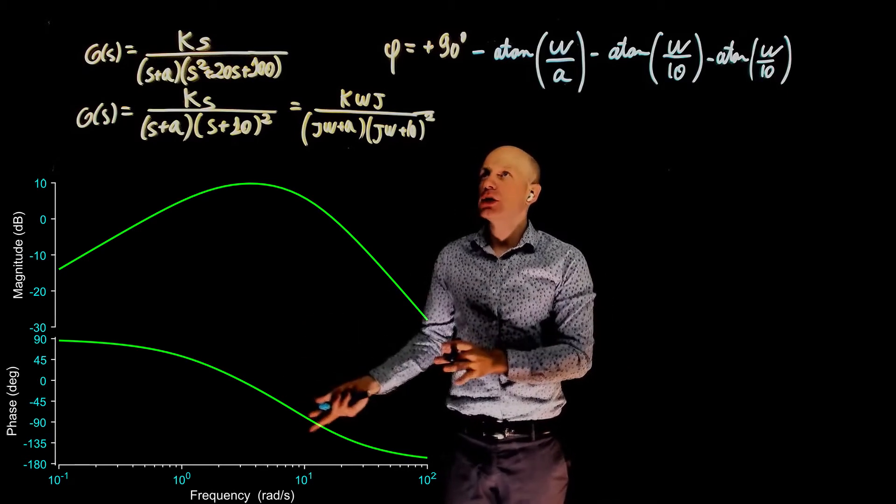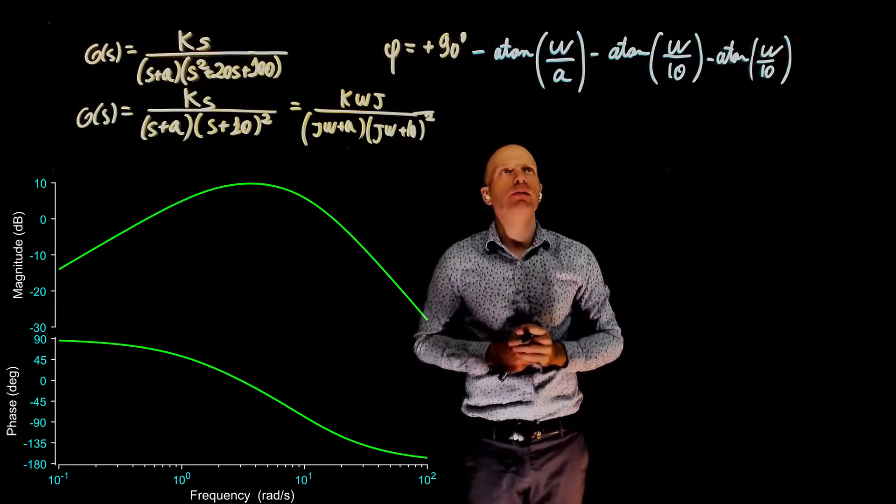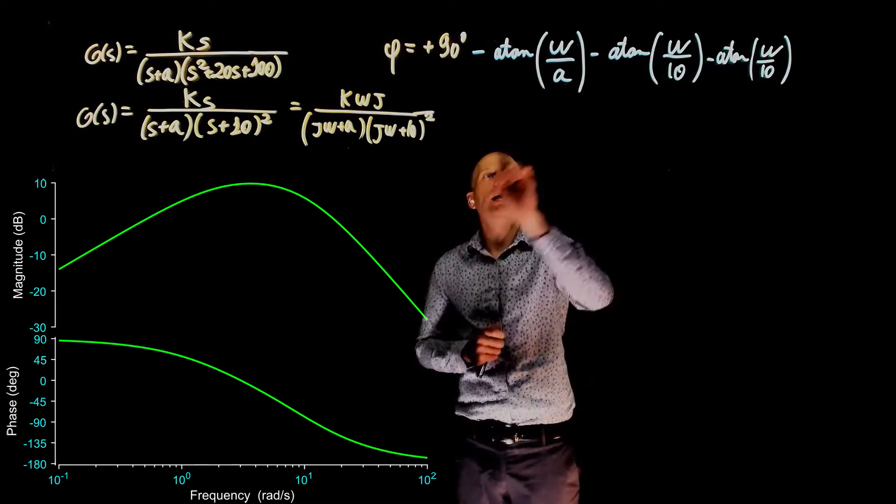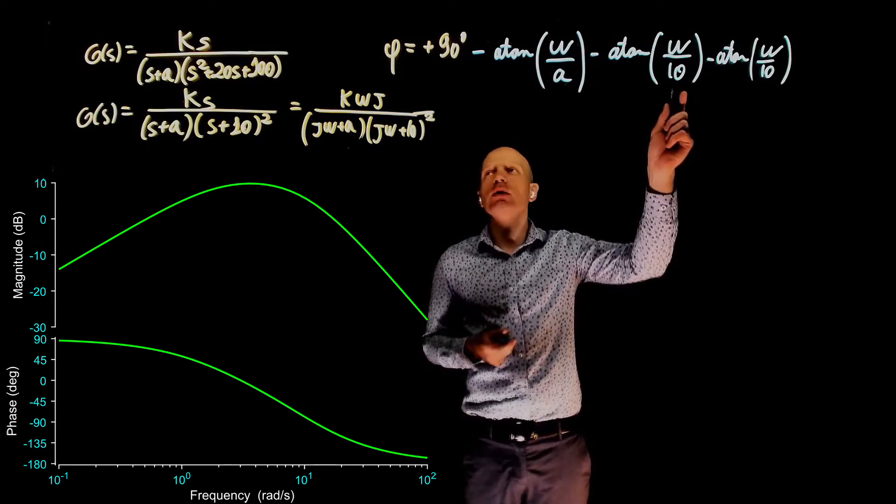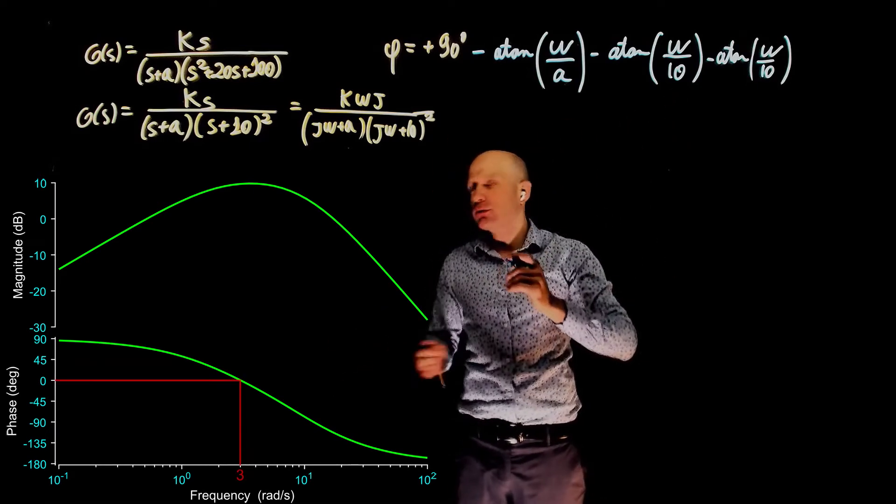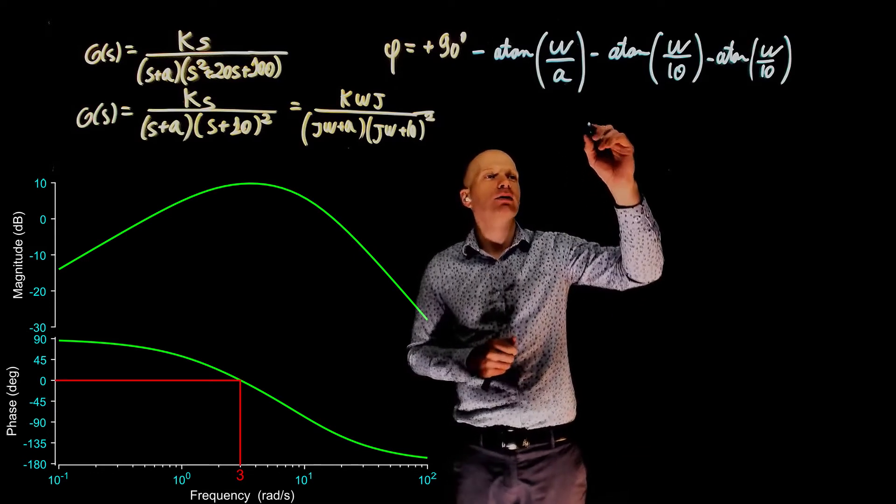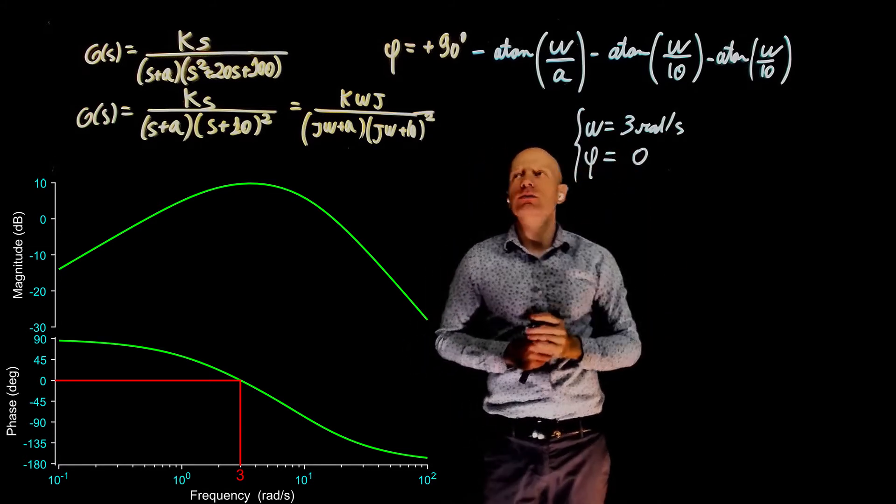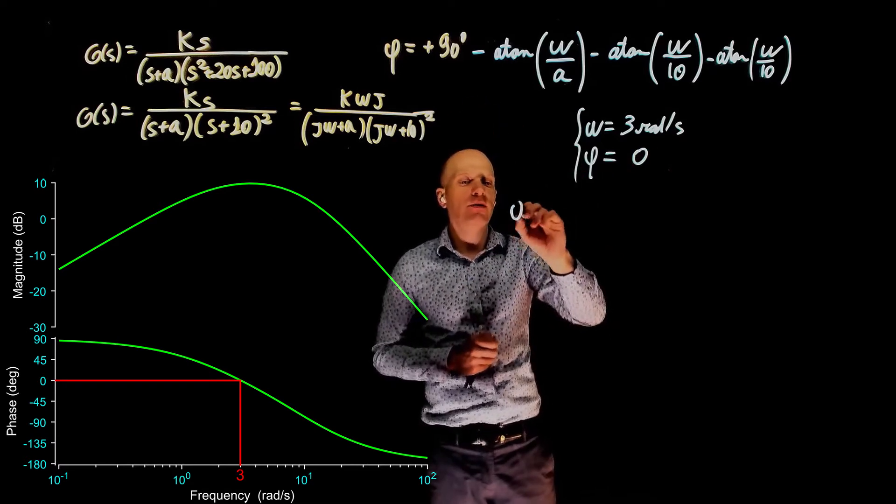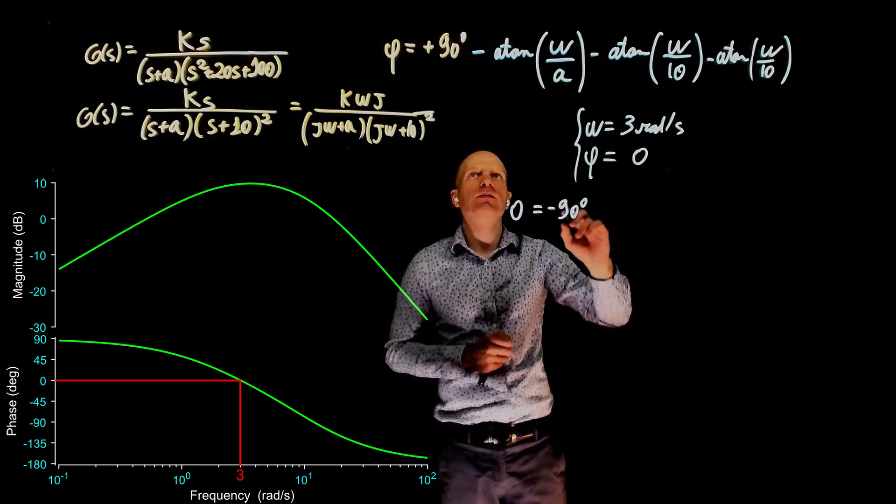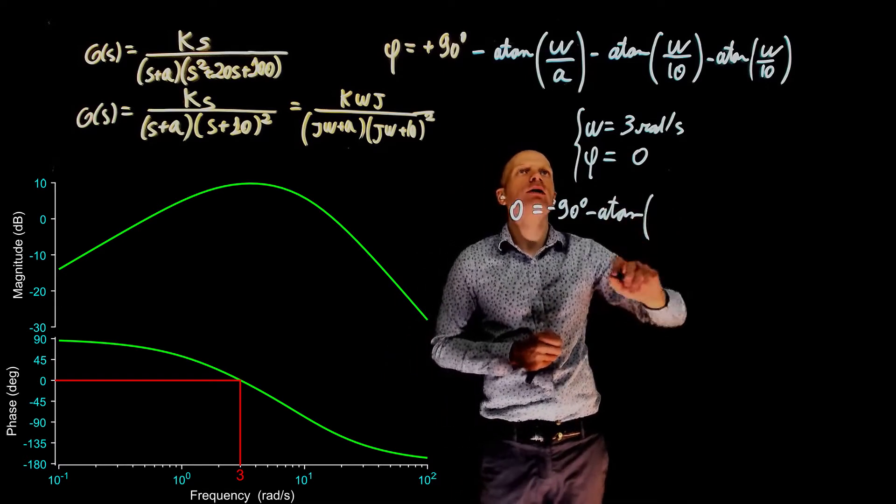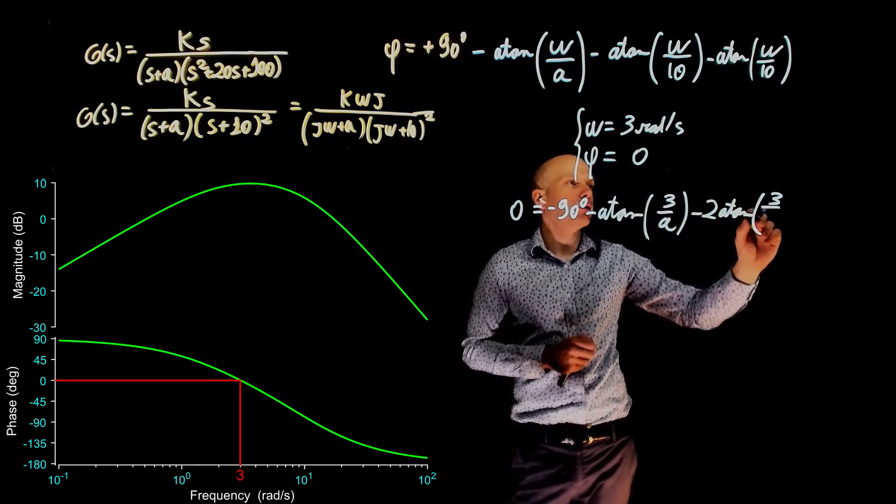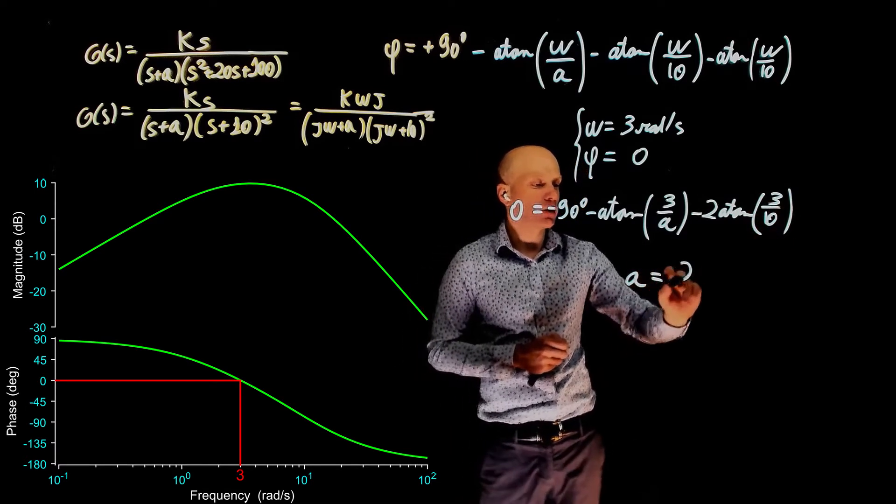This is now the expression for the phase. What do we do next? If you look at the Bode plot, we can now pick any point along the phase diagram. And that point must satisfy this expression. We see that the only unknown here, once you do that, is the variable a. For simplicity, we can take the value of the frequency that makes the phase zero. And that value, if you look close at the Bode plot, will be three radians per second. When omega is three radians per second, the phase is zero. Now replace these in the expression. So you have zero equals to 90 minus arc tangent of omega 3 over a minus 2 arc tangent of 3 over 10. Now solve for a, a should be approximately 2.